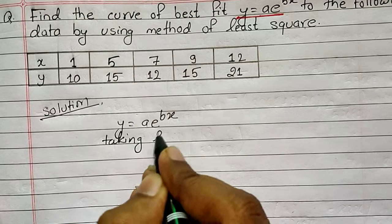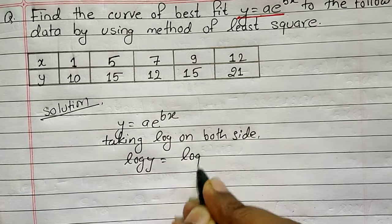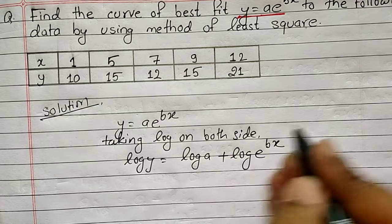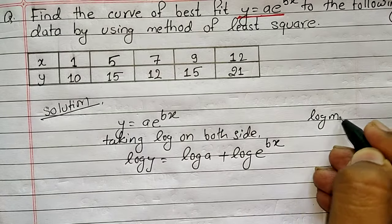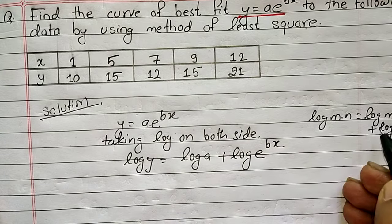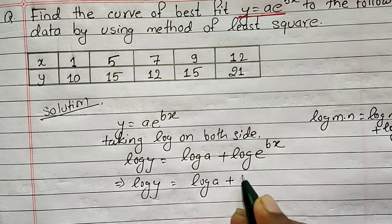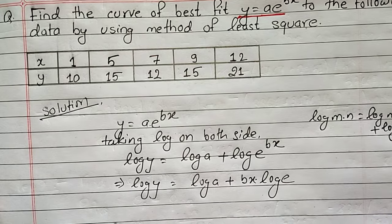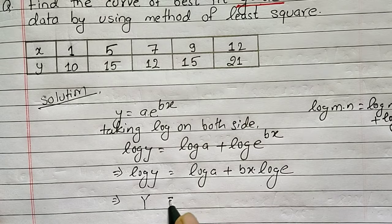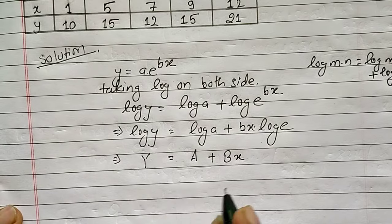Taking log on both sides: log y = log a + log(e^(bx)), because log(m × n) = log m + log n. So writing it out: log y = log a + bx · log e. For abbreviation, let capital Y = log y, capital A = log a, and capital B = b · log e, giving us Y = A + Bx, which looks similar to the equation of a straight line.